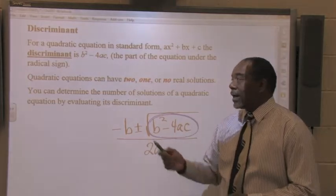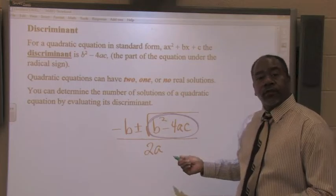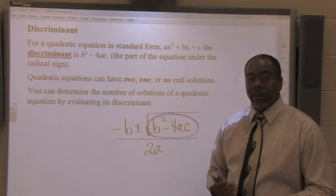Quadratic equations can have either two, one, or no real solutions. The discriminant can help you determine how many solutions there are.